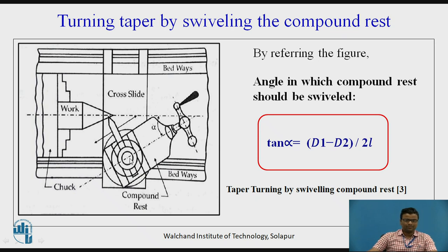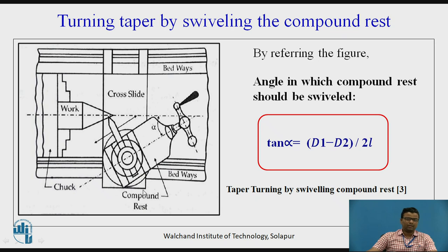To set the angle, there is a swivelling plate below the compound rest. By loosening the screw on the swivelling plate, you can swivel the compound rest and swivelling plate together, and mark the graduation — for example 15 degrees or 20 degrees as required. You can provide the taper turning operation by simultaneously rotating the compound rest and the swivelling plate to angle alpha. Graduations for angles in degrees are available.